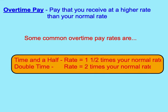Overtime pay — and you want to put this in your notebook — is pay that you receive at a higher rate than your normal rate. So when you get paid a straight time fee, that's an hourly rate. Maybe you get paid $10 an hour for two hours; at the end of the day you'd be paid $20. For overtime, you're going to be paid a higher rate if you go over specific hours.